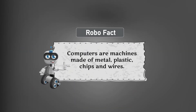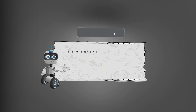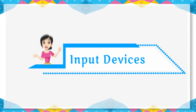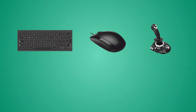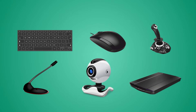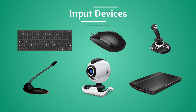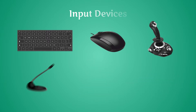Computers are made of metal, plastic, chips and wires connected to the machine. Input devices are the devices that help us put data into the computer. They help us give instructions to the computer, and that is why they are called input devices. Let us learn about some input devices.